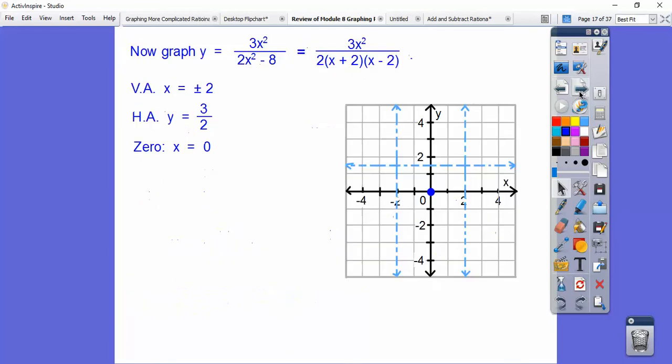Let's go ahead and start graphing this. So here's the vertical asymptotes at plus or minus 2 right there. Here's the horizontal at 3 halves, y equals 3 halves, which is 1 and a half. And then here's the zero right here, x equals 0. So just set up a t-chart right there.